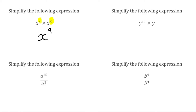For this next question, we've got y to the power of 11 multiplied by y. Because we're multiplying again, we're going to add the indices. We've got 11 in the first one, and y on its own is y to the power of 1, though we don't actually need to write that. So adding the indices: 11 plus 1 is 12, and this would simply be y to the power of 12.